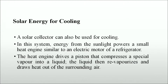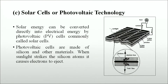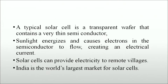A solar collector can also be used for cooling. Energy from sunlight powers a small heat engine similar to an electric motor of a refrigerator. The heat engine drives a piston that compresses a special vapor into a liquid, which then revaporizes and draws heat out of the surrounding air. Solar energy can also be converted directly into electrical energy by photovoltaic cells, commonly called solar cells, which are made up of silicon and other materials. When sunlight strikes silicon atoms, it causes electrons to eject through a semiconductor, creating an electrical current.